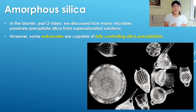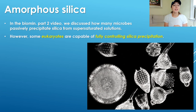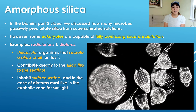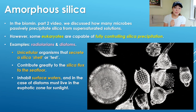Moving on to amorphous silica: as cool as the magnetite and greigite-producing bacteria are, the amorphous silica producers are incredibly impressive. We talked in the part two video about passively biomineralized amorphous silica, but in this video we'll talk about how this process can be controlled by some eukaryotes — specifically radiolarians and diatoms. Don't be fooled by the word eukaryote — they are still unicellular microorganisms, but they secrete a silica shell or test. Despite their tiny size, they contribute incredible amounts of silica to the seafloor. They inhabit surface waters, and in the case of diatoms, they must live in the euphotic zone because diatoms photosynthesize.